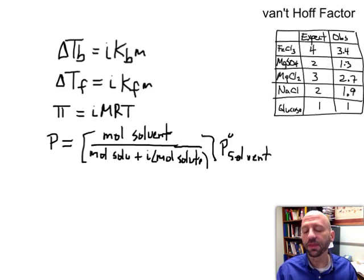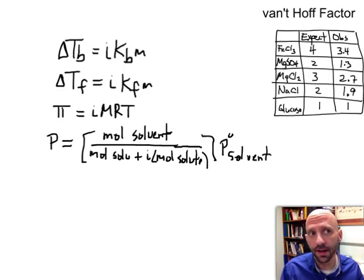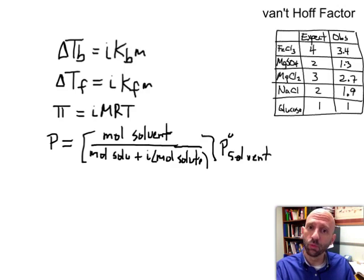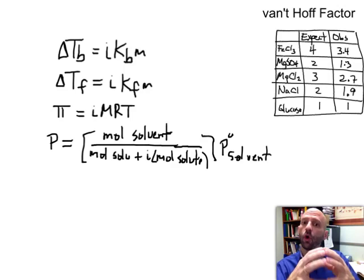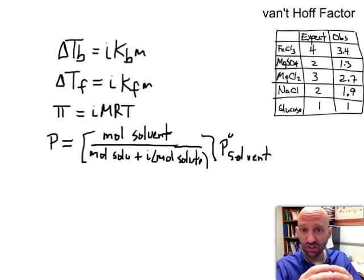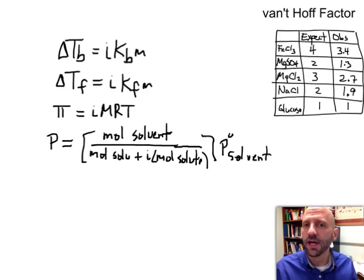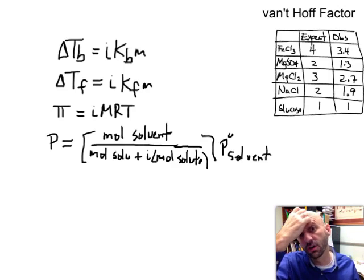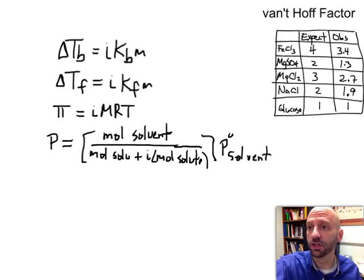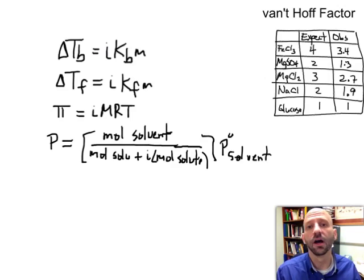And that is that we have to account for the fact that when we have an ionic solute, something like sodium chloride or lithium fluoride, an ionic solute that when you put it in water, we know these things dissociate. So one mole of sodium chloride ends up producing two moles of solute particles. And we have to account for that in our various colligative property equations that you see me working with up here.